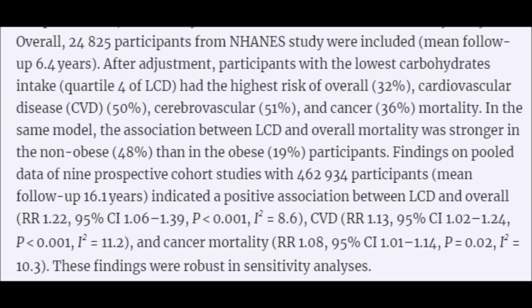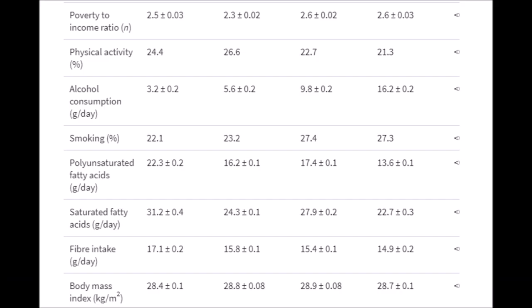Quartile 4 of the low carbohydrate diet score had the highest risk of overall cardiovascular disease, cerebrovascular disease, cancer mortality, overall mortality, et cetera. Looks really, really bad, doesn't it?